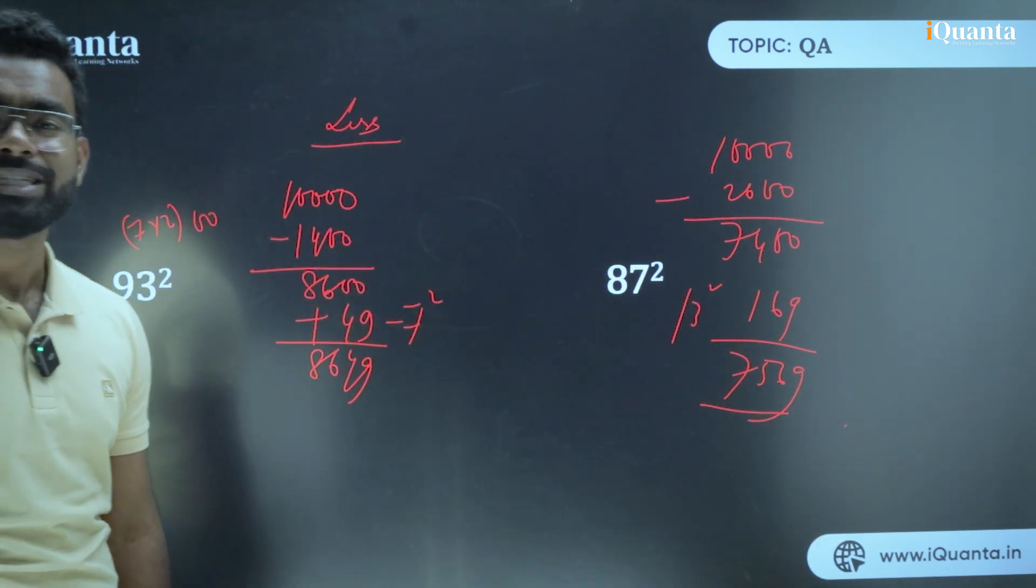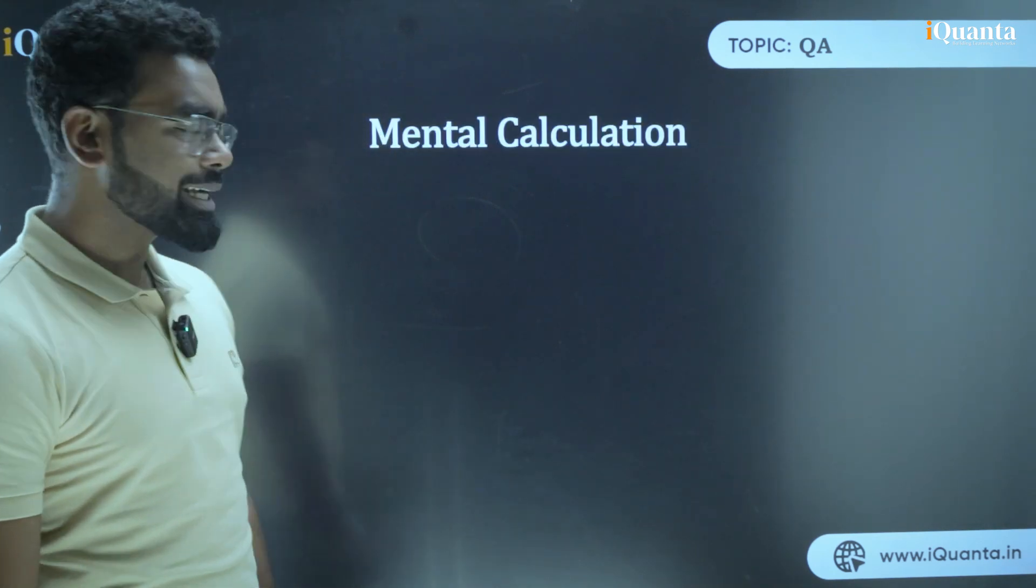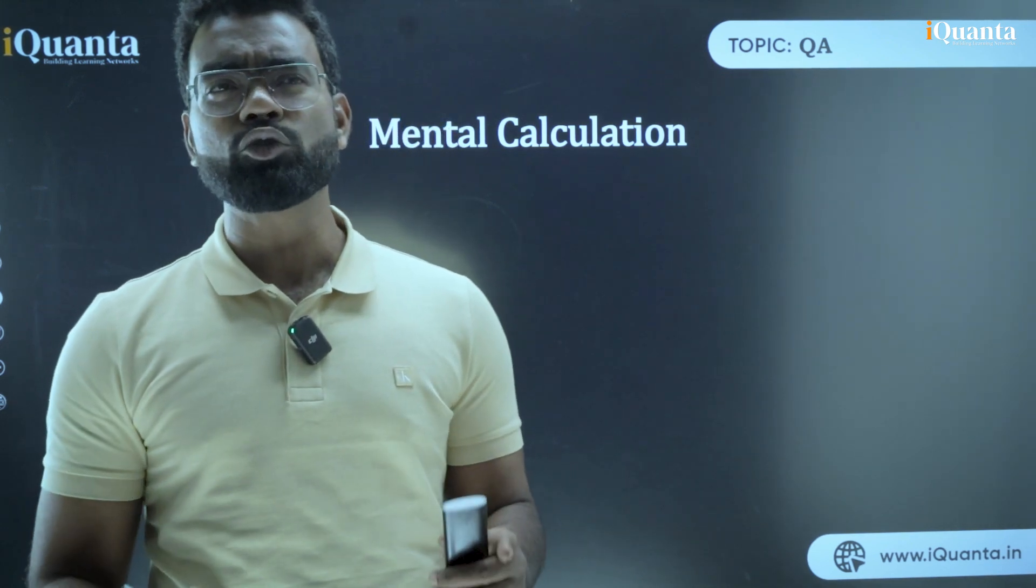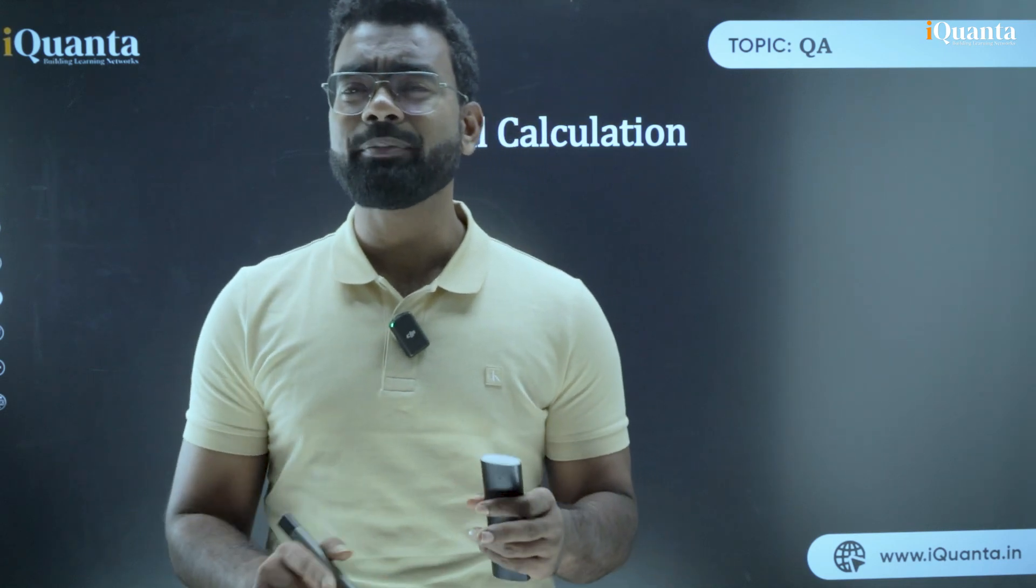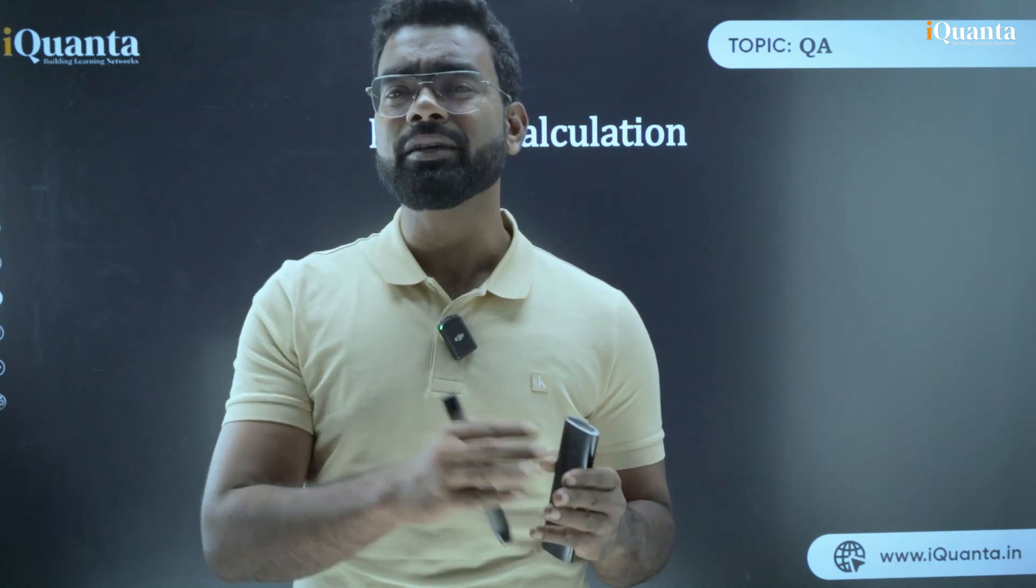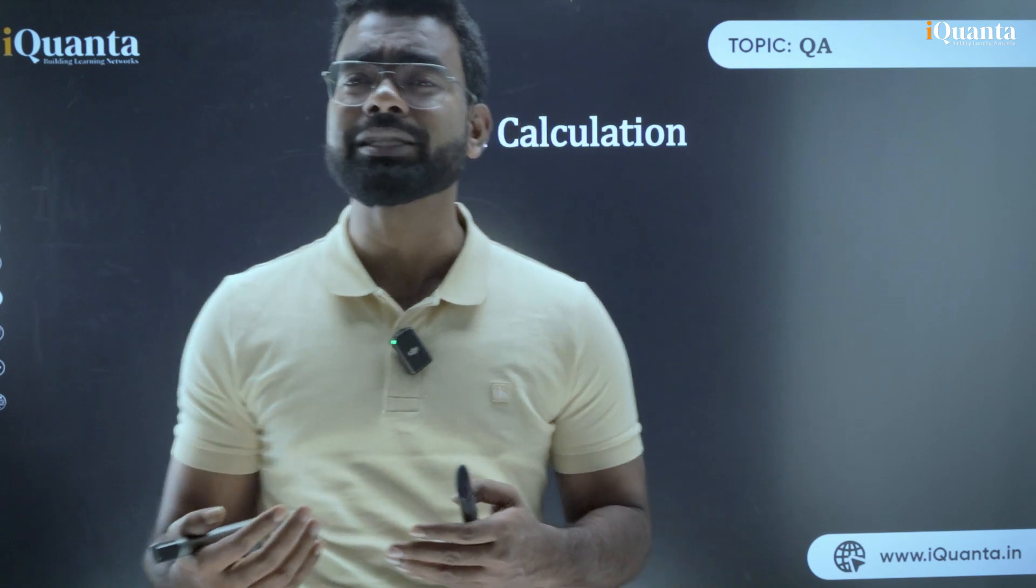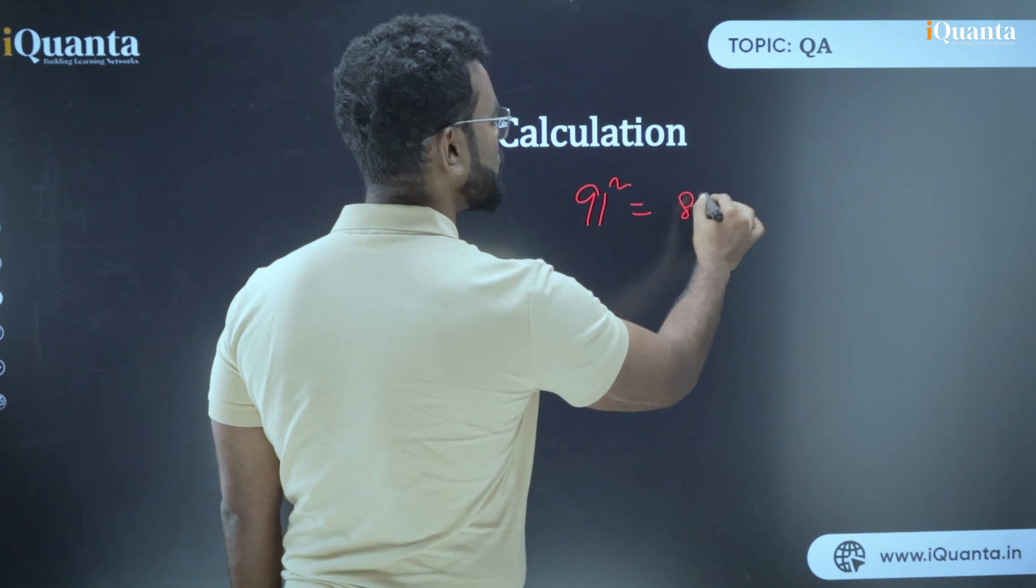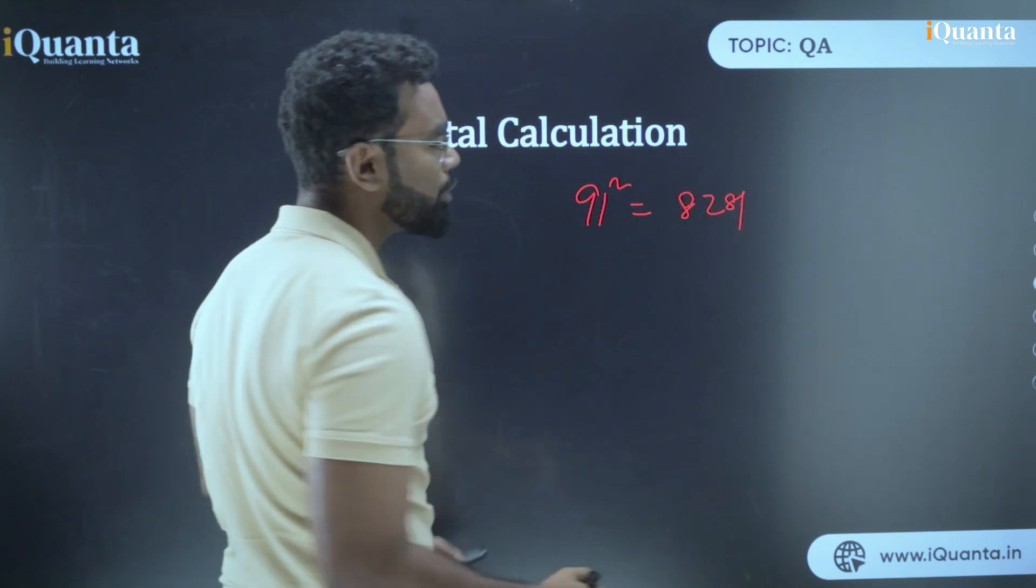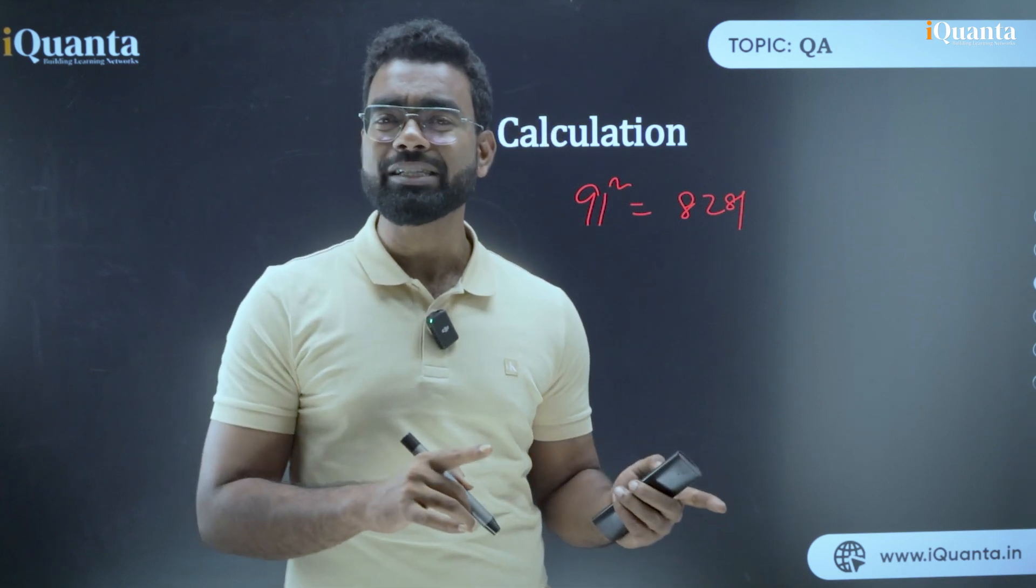Now think about how we do it mentally. How we can do this kind of thing mentally. If you need to do, let's say I'm just giving you this example, let's say it is 91 square. So the first step is 91 minus 9, or 100 minus 18, anything. So 91 minus 9 is 82. So 8200 plus what is 9 square? 81. So answer is 8281. So if I write 91 square, your answer is 8281. You understand how I can do it mentally? Because initially it was 100, then I subtracted 18. So 100 minus 18 is how much? 8200. What is 9 square? 81.